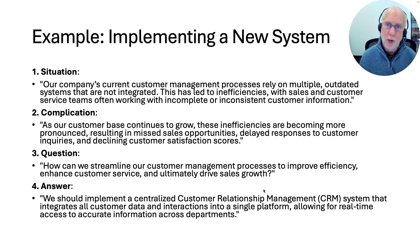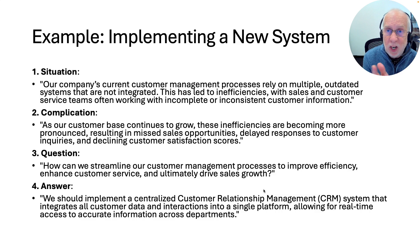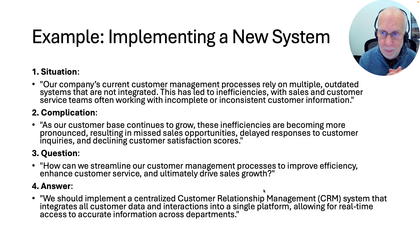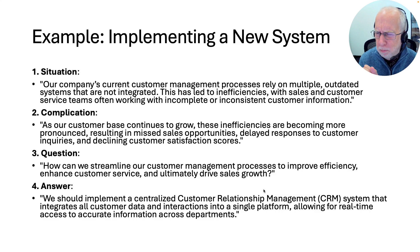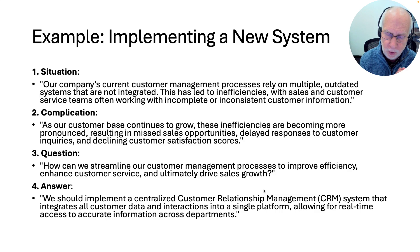The situation is where you work backwards through your chain of reasoning until you find the last thing which basically everyone is going to agree on — something everyone agrees on either because they all know it or because it relies on facts that could easily be verified. For example, in a memo about implementing a new system: 'Our company's current customer management processes rely on multiple outdated systems that are not integrated. This has led to inefficiencies, with sales and customer service teams often working with incomplete or inconsistent customer information.' That's the kind of thing everybody could agree on.